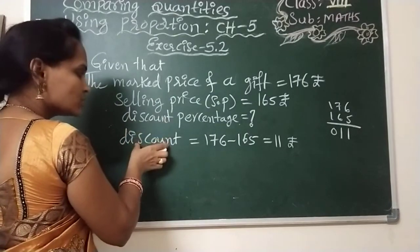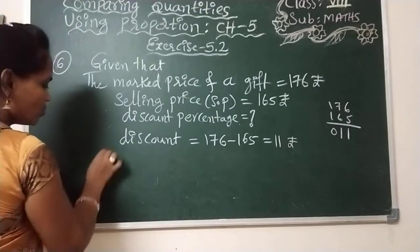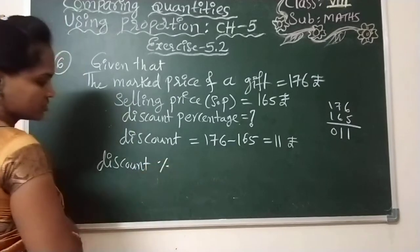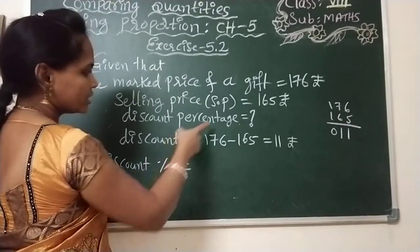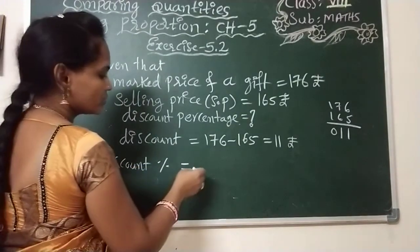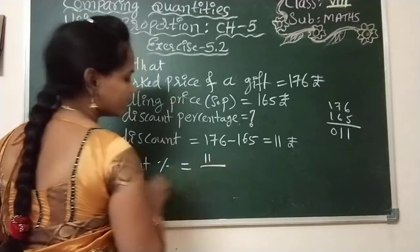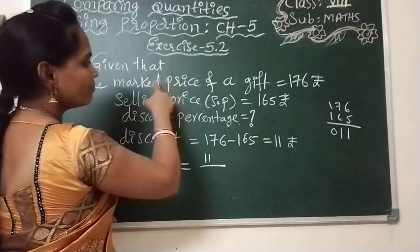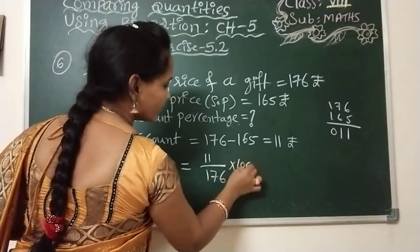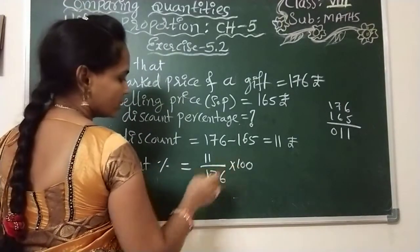Now we have to find out the discount percentage. After getting discount, only by using this value we can find out the discount percentage. Discount percentage is equal to discount divided by marked price times 100. Why 100? Because we are finding percentage, so we should take 100.